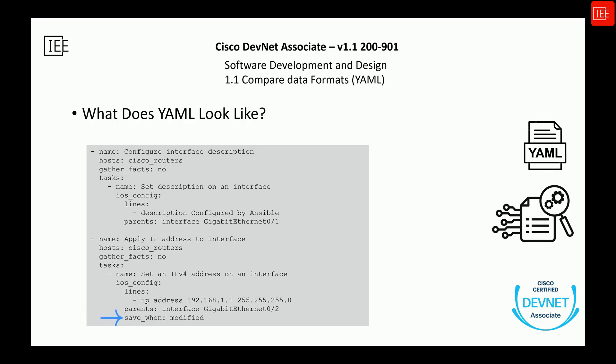The save_when key is a neat good practice — it tells Ansible to save the configuration only if something was actually changed. It's a good way to avoid unnecessary writes to the device's memory. As you can see, this style allows network engineers to focus on what they want to achieve rather than getting bogged down by complex syntax or programming logic. YAML makes these tasks feel more like structured instructions than like programming code.